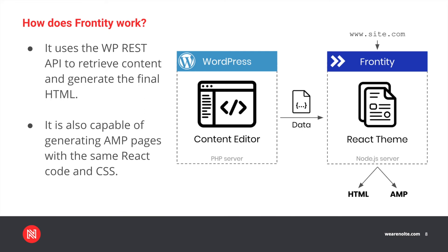How does Frontity work? With Frontity we can still use our WordPress dashboard to edit and manage our content as usual. If we make changes, content will automatically update on Frontity. Frontity apps live in a Node.js server tailored for WordPress, so it uses the WP REST API to retrieve content and generate the final HTML. It is also capable of generating AMP pages with the same React code and CSS.